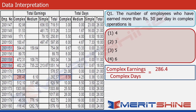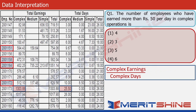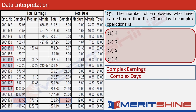286.48 divided by 8.38 — less than 50. 502.10 divided by 10 — greater than 50, qualifies. 1303.88 divided by 25.5 — greater than 50. To verify: 25.5 times 100 is 2550, half is 1275, and the numerator 1303.88 exceeds that, so it qualifies. 1017.94 divided by 26 — less than 50. 46.56 divided by 2 — less than 50. 116.40 divided by 5.00 — less than 50.